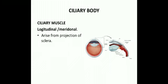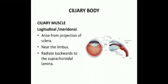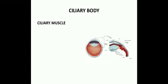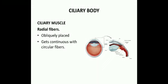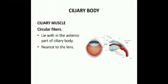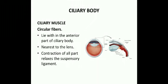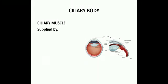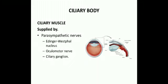The longitudinal or meridional fibers arise from the projection of the sclera near the limbus and radiate backwards to the suprachoroidal lamina. The radial fibers are obliquely placed and become continuous with the circular fibers. The circular fibers lie within the anterior part of the ciliary body, close to the lens. The contraction of all these parts relaxes the suspensory ligament. The ciliary muscle is supplied by parasympathetic nerves through the Edinger-Westphal nucleus, the oculomotor nerve, and the ciliary ganglion.